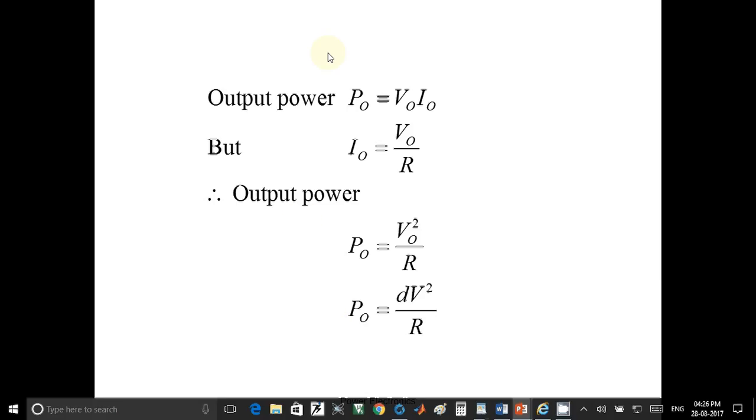Output power is given by output voltage into output current. Output current is V output upon R. So output power is V output square upon R. V output square is D into V square. Final output power is duty cycle into supplied voltage square upon load resistance.